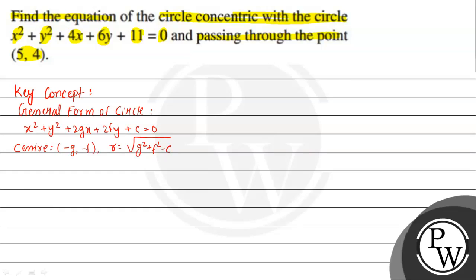Concentric circles are circles that have the same center but different radius. That means two or three circles which have a common center point.